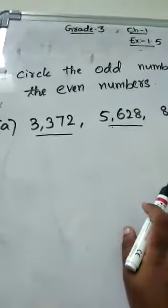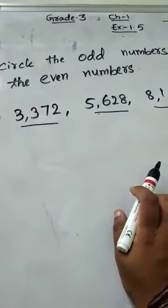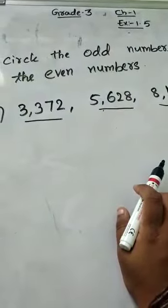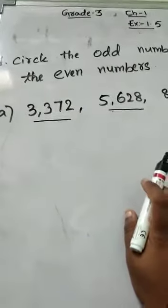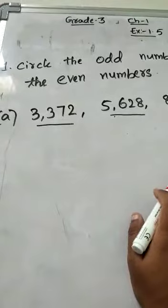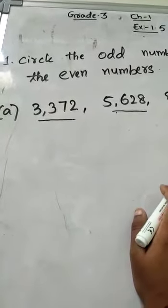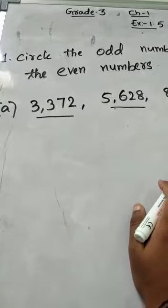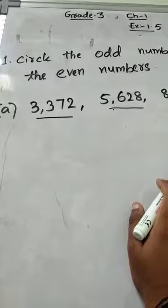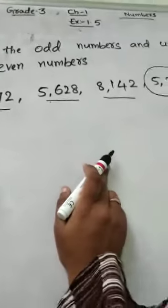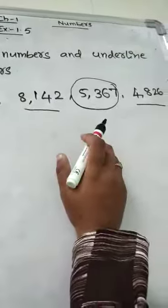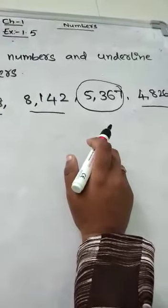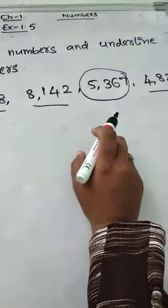I already explained to you what an even number is. An even number is a number that makes a perfect pair — like 2, 4, 6, 8, 10, 12, 14, 16, and so on. What is an odd number? A number which does not make a perfect pair — like 1, 3, 5, 7. That is an odd number.